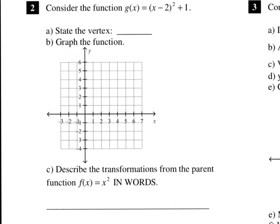We need the vertex of this, so it's going to be the opposite sign of that negative 2, so positive 2, and it's going to be the same sign as that 1, so positive 1. So we're going to go 2 over and 1 up, and put a dot for our vertex.